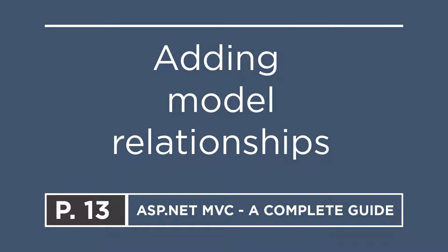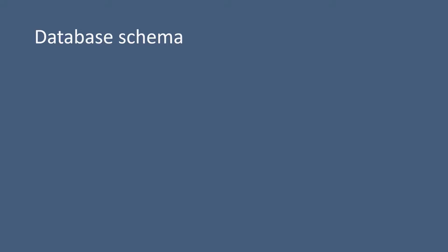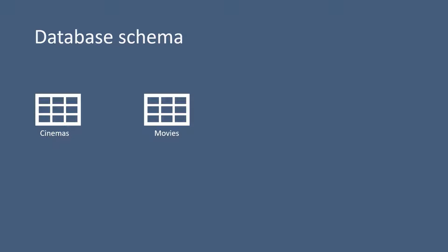We have added a couple of models which are going to represent the database tables, but we have still not added any relation between them. How is a movie related to a cinema, how is a producer related to a movie? So far we have created the cinema model for the cinemas table. We have the movies, we have the producers, and we have the actors.